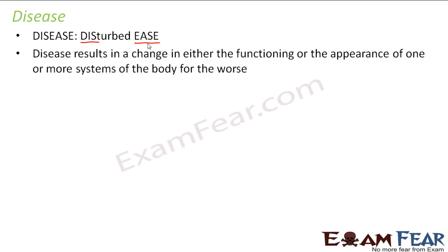Disease results in a change in either the functioning or the appearance of one or more systems of the body for the worse. Maybe any system of the body is not functioning properly — maybe your digestive system is not working properly, so you will not be able to digest your food, and there are possibilities that you might have vomiting or loose motions. Similarly, if you are having some problems in your eye — you got some infection or allergy — there will be swelling, redness, and your eyes will become watery.